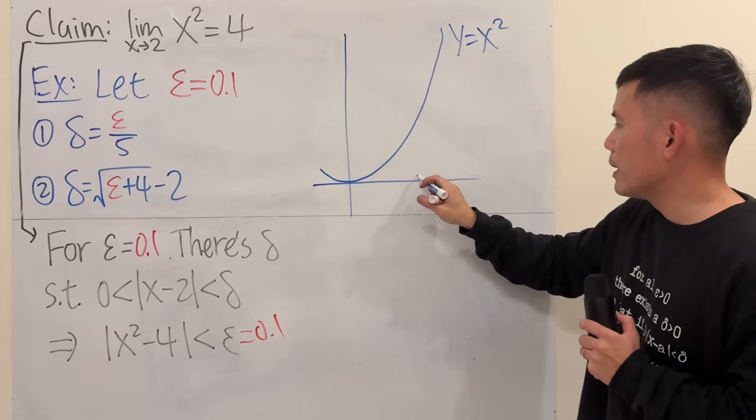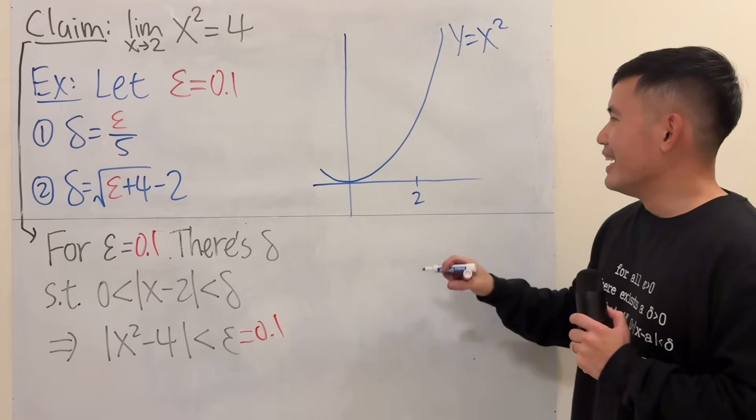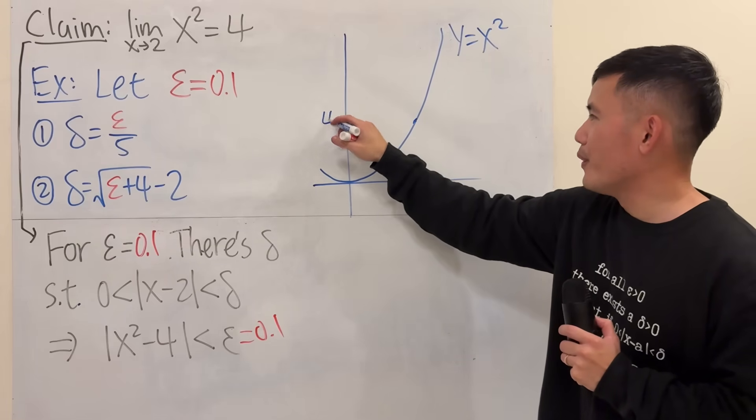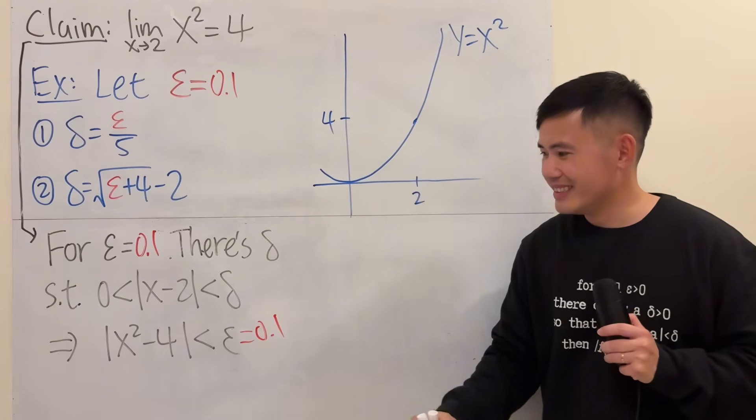And here is the graph for it. And of course, we are talking about when x is approaching 2, so 2. Now, if you go up, the y value is of course 4.